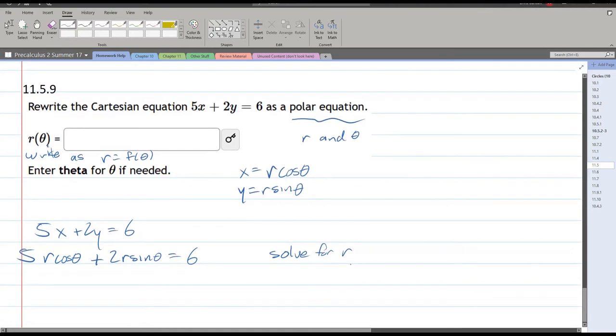So how do we do that? We have to get r by itself. Now r appears twice, so we have to factor it out.